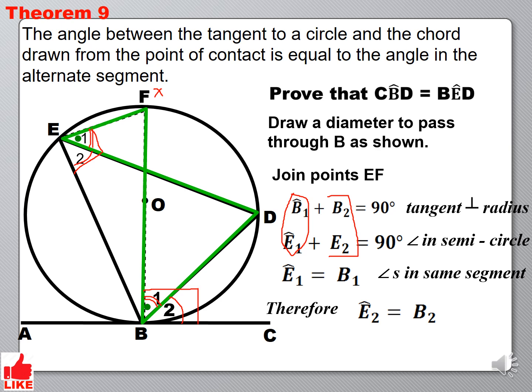And E2 and B2 are the angles that we are proving. So, we can now say, therefore, CBD is equal to BED. And that proves the theorem that the angle between the tangent to a circle and the chord drawn from the point of contact is equal to the angle in the alternative segment.